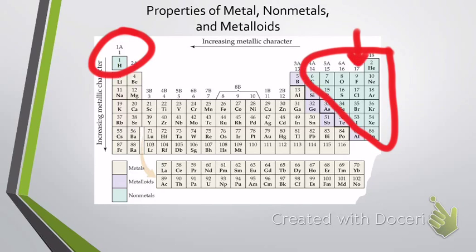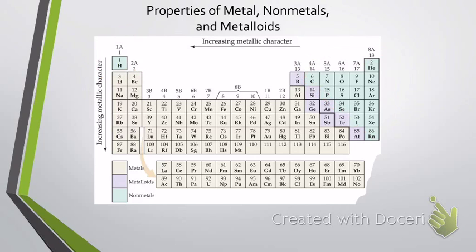Once in a while, you'll even see some periodic tables put hydrogen on here twice, and put it also right above fluorine. However, just remember: with the exception of hydrogen, nonmetals are on the right-hand side of the periodic table.